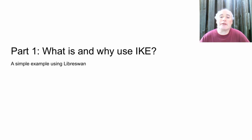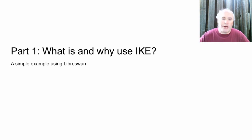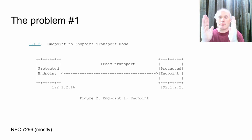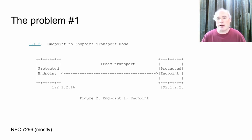What is and why use an Internet Key Exchange daemon? Let's do an example using LibreSwan. Problem one: you have two endpoints, and you want to make sure that all the traffic between the two endpoints is encrypted — no ifs, no buts. Any traffic going between those two, encrypt it. That's called transport mode.